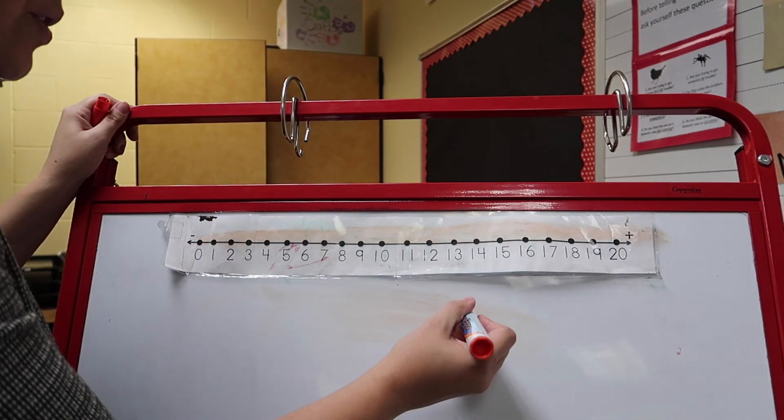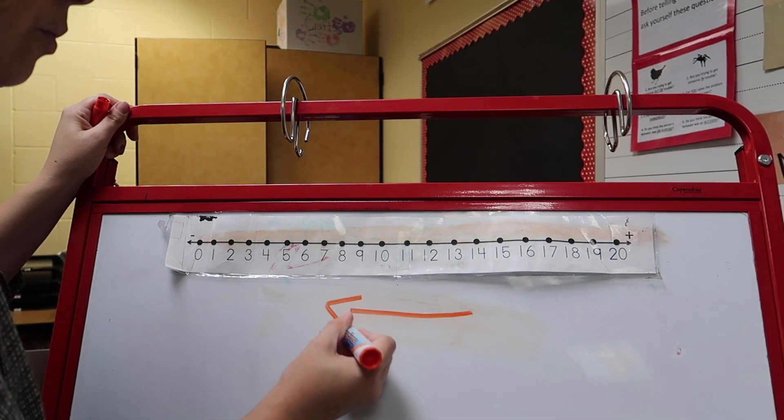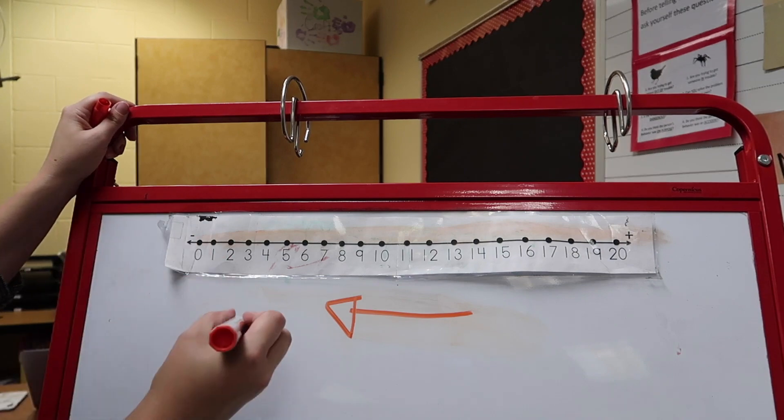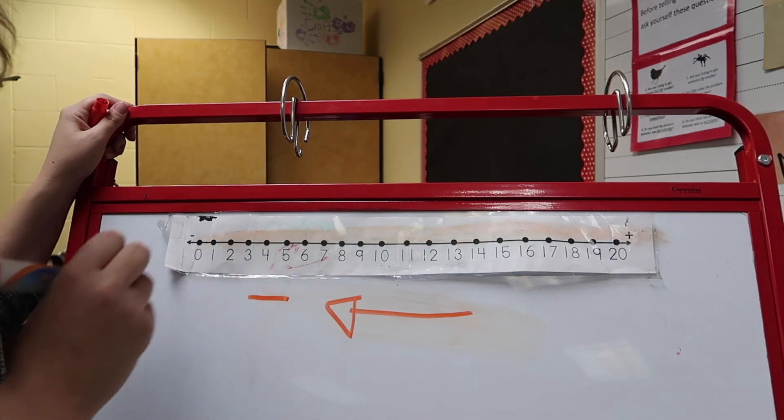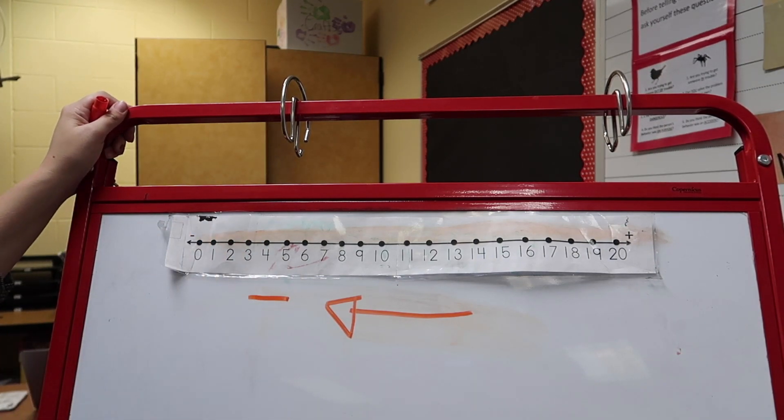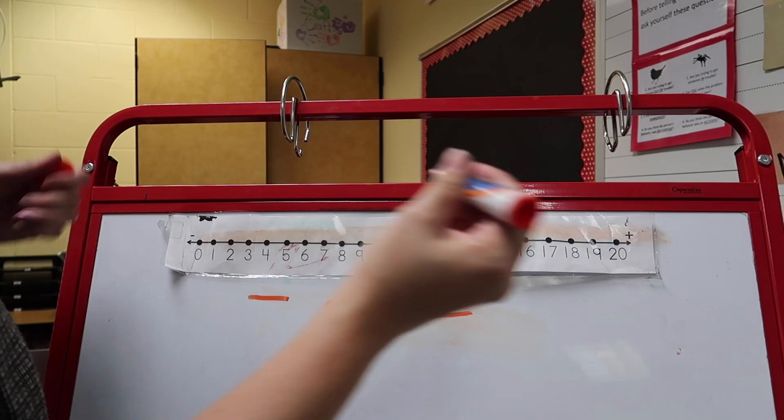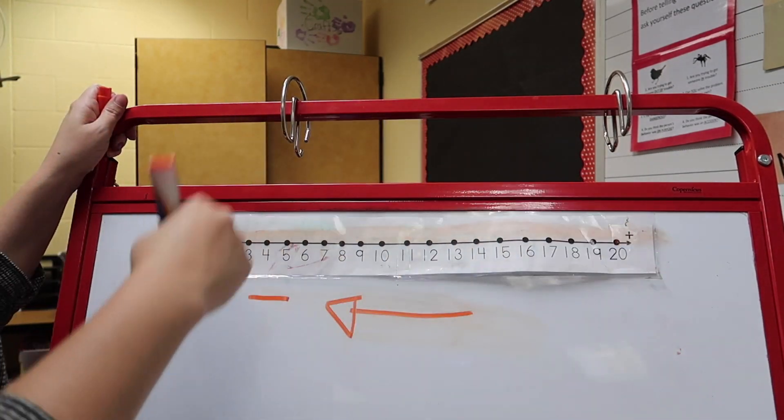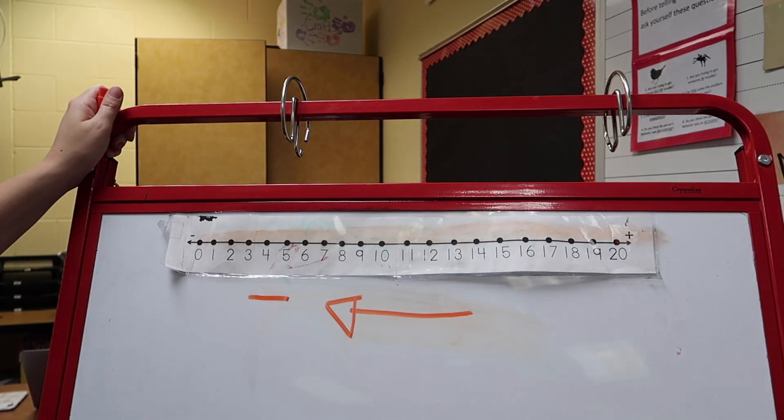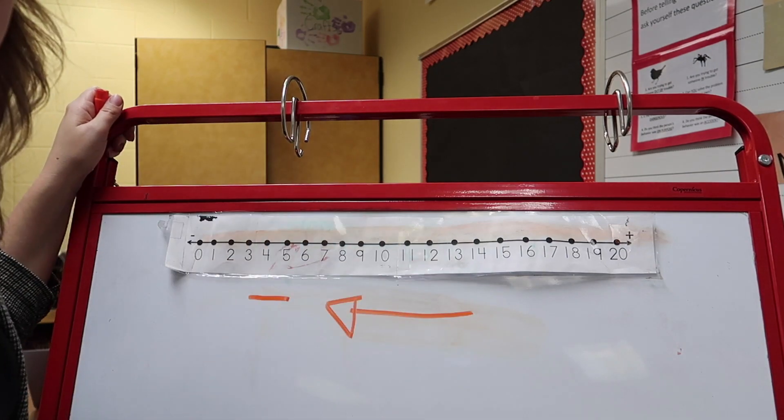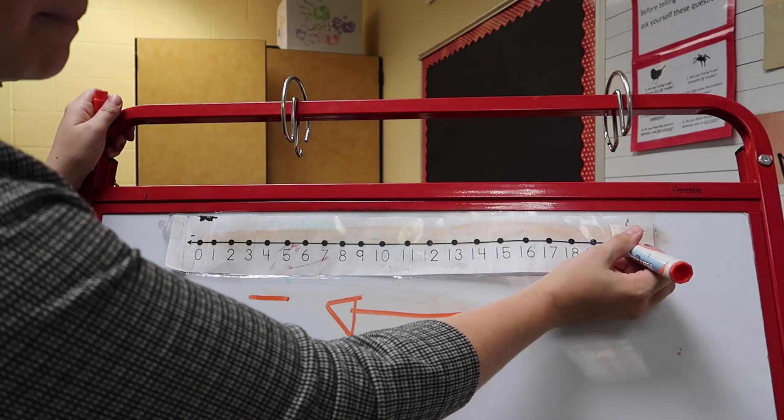But we can also jump backwards on this number line and when we do that that's something called subtraction. And maybe you know what subtraction is, maybe you don't. It's okay if you don't but that's like taking away. So we can start at twenty and subtract or go backwards. And we can also think of this as counting backwards. So let's start at twenty and let's make some hops all the way down to zero. Okay here we go. Ready? Count with me.